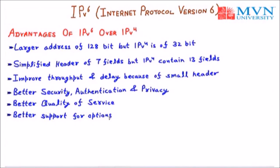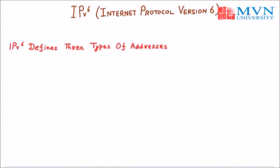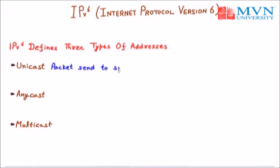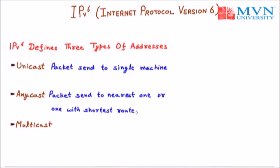IPv6 defines three types of addresses. First, unicast — the packet is sent to a single machine, which is point-to-point communication. Second, anycast — the packet is sent to the nearest node, meaning the one with the shortest route from the sender. Third, multicast — the packet is sent to every machine in a specific group. That is all about IPv6. Thank you.